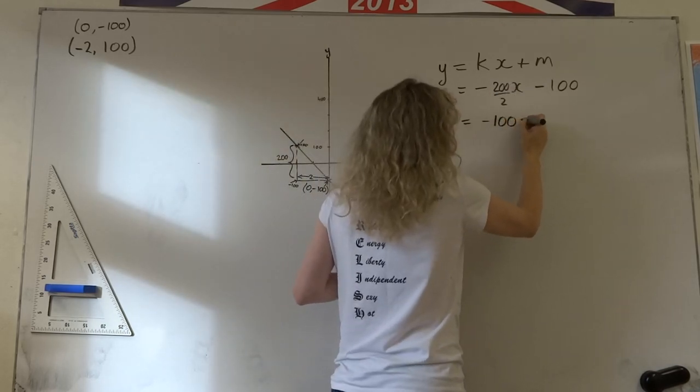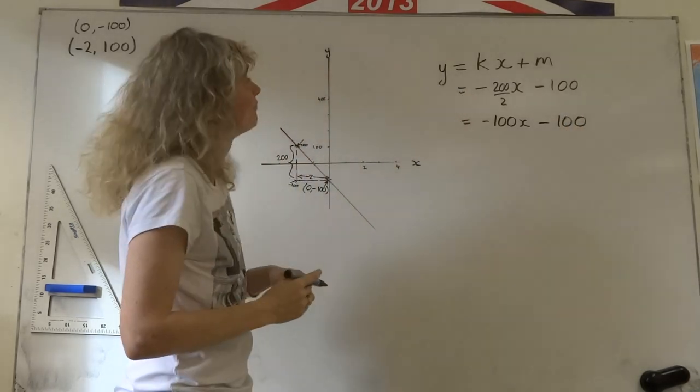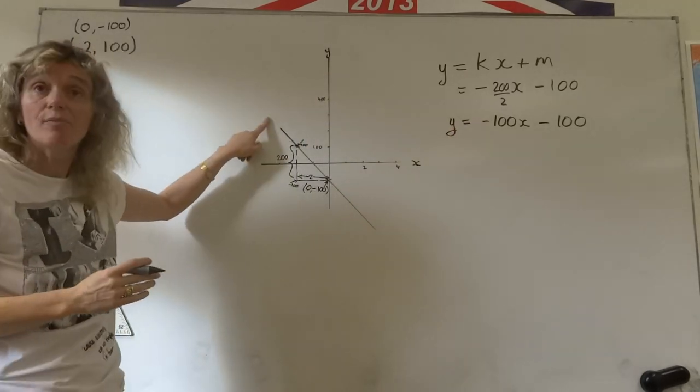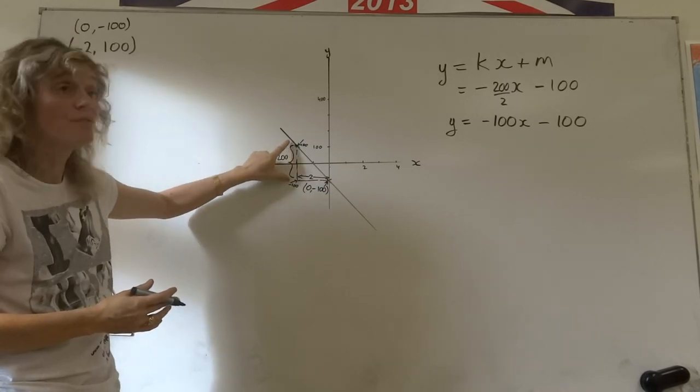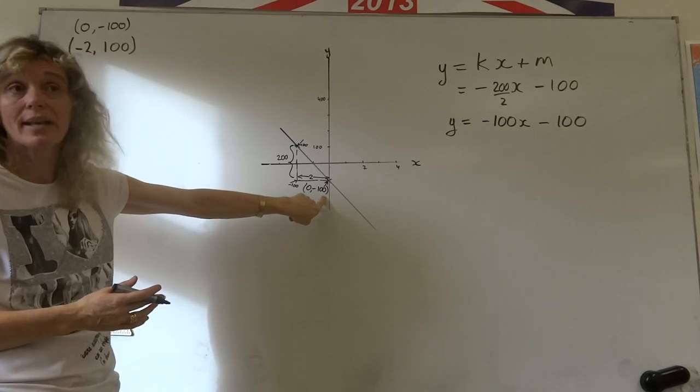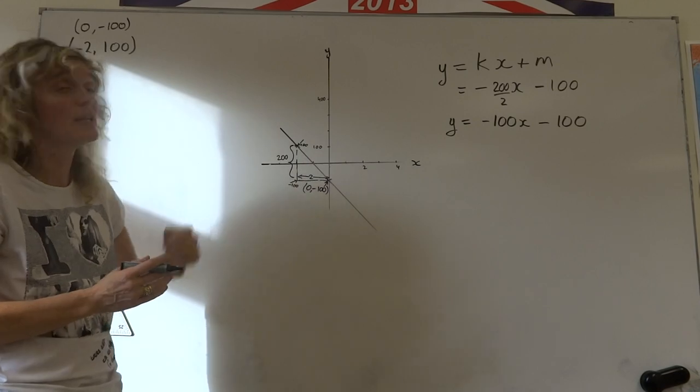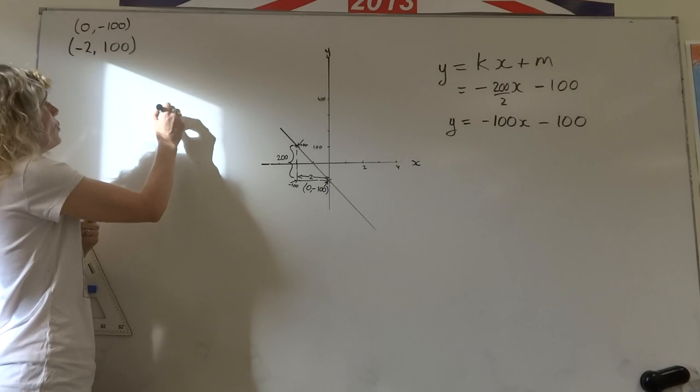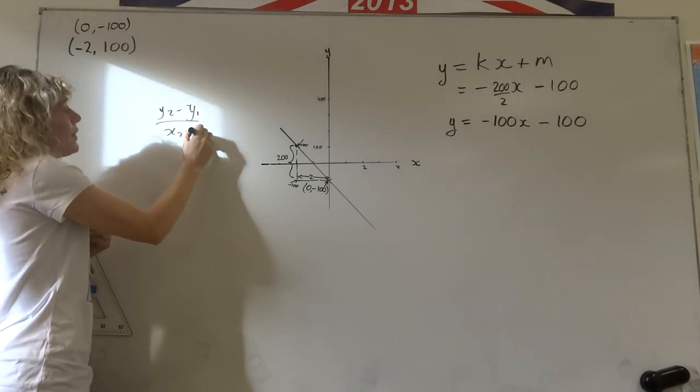So we get that 200 divided by 2 is 100. So we get that the equation of this is just minus 100x minus 100. The equation of this line was negative because it's sloping downwards. Without using the rise over run, we had a difference of 200 in the y-axis and we had a difference of only 2 in the x-axis, so we get this equation for this line quite easily.